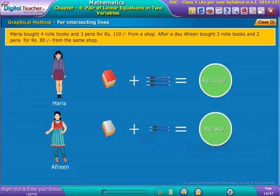Example 1: Let us take the previous example. Maria bought four notebooks and three pens for rupees 110 from a shop. After a day, Maria's friend Afrin bought three notebooks and two pens for rupees 80 from the same shop.